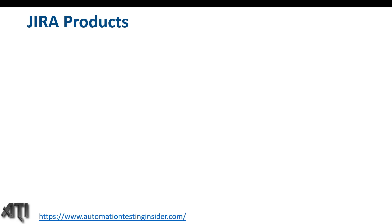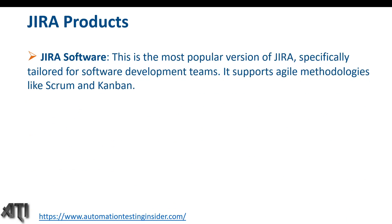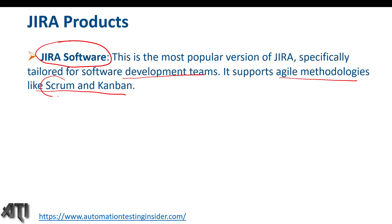Now let's talk about the different products in Jira. The first and most important one we are going to use for software development is Jira Software — the most popular version, especially tailored for software development teams. It supports agile methodologies like Scrum and Kanban. There are different templates — you can go for a Scrum project or a Kanban project, which we are going to discuss in coming days.